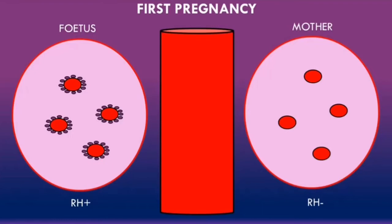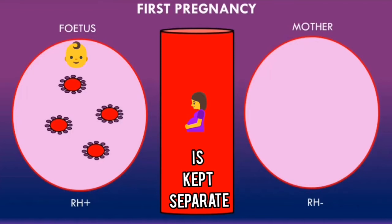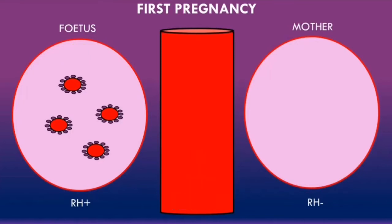As the fetus is rhesus positive, it has no capability to produce anti-D antibodies. However, the mother is rhesus negative, so she is capable of producing anti-D antibodies, but the body doesn't naturally produce them and we are assuming the mother hasn't been sensitized yet. For the majority of the pregnancy, the fetal circulation and the maternal circulation are kept separate, so there is no mixing of blood between the fetus and the mother.